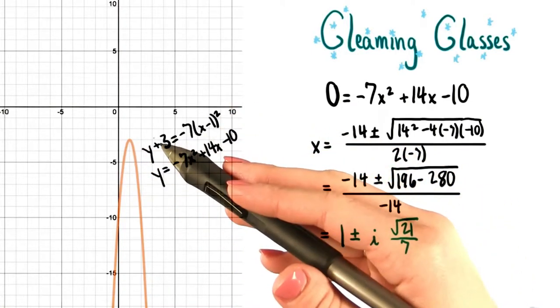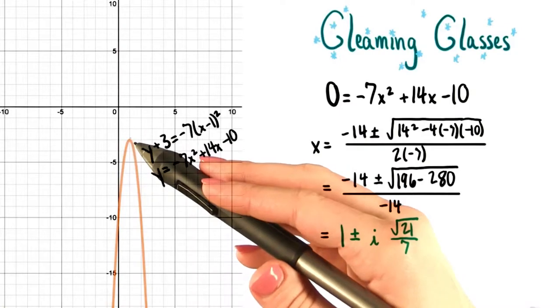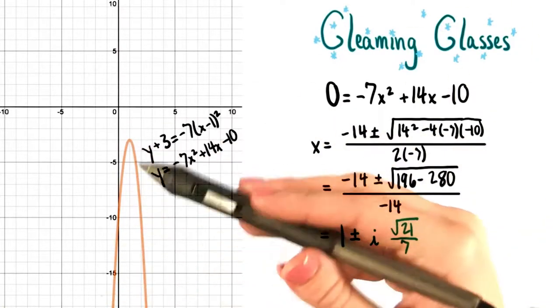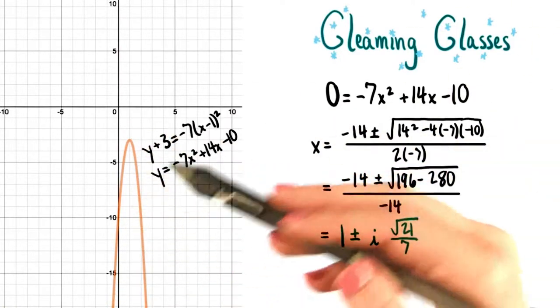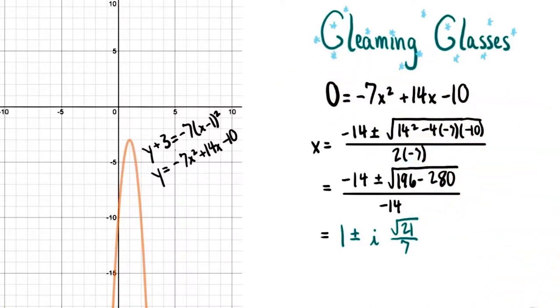And looking at where the vertex of our parabola is, below the x-axis, and the fact that the parabola is pointing downward, this curve doesn't really fit the situation that we're interested in.